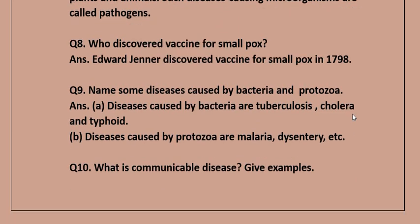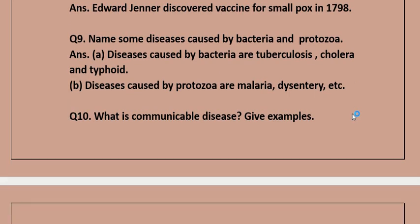Question 8: Who discovered the vaccine for smallpox? Answer: Edward Jenner discovered the vaccine for smallpox in 1798. Question 9: Name some diseases caused by bacteria and protozoa. Answer: Diseases caused by bacteria include tuberculosis, cholera, and typhoid. Diseases caused by protozoa are malaria, dysentery, etc.